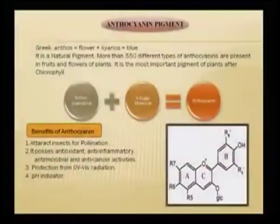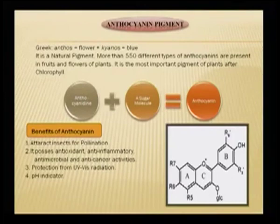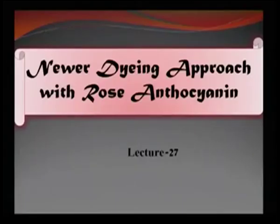You see that anthocyanin has a lot of features that need attention. Today we are going to look at the newer dyeing approach with rose anthocyanin, and therefore we must dedicate some time to the way rose anthocyanin is extracted. We must see how it is used for dyeing and what are the shades and color depth that can be derived on different fabrics — cotton, silk and wool — so that we can prove its wide applicability.